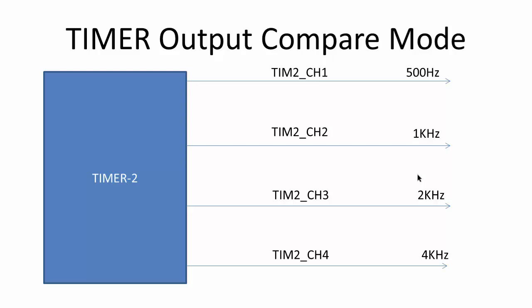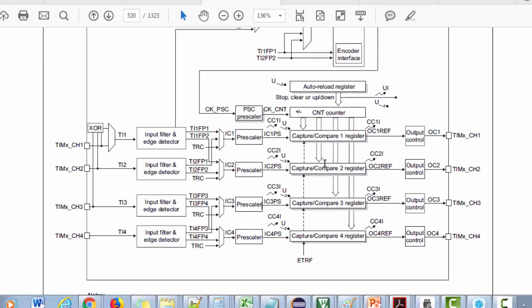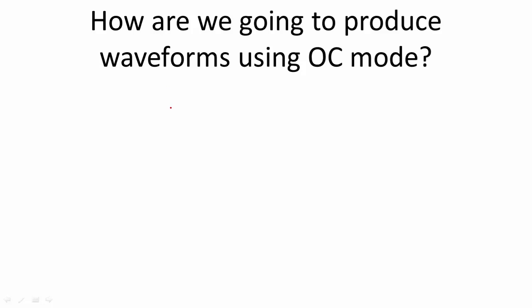We are going to utilize all 4 channels of the Timer 2 peripheral as output to produce square waveforms of different frequencies. Most students get confused looking at the diagram, thinking the timer has four separate input channels and four output channels — that is wrong. The general purpose timer has only four channels. If you use them for input capture, they are configured as inputs; if you use them for output compare, they are configured as outputs. This timer does not have eight channels.